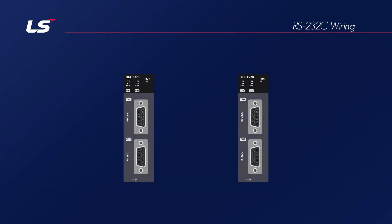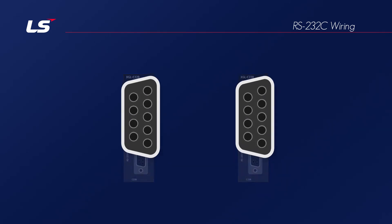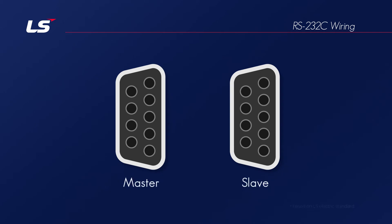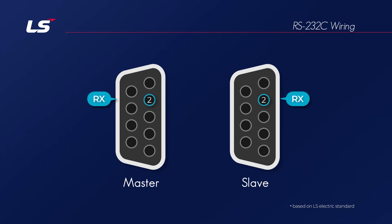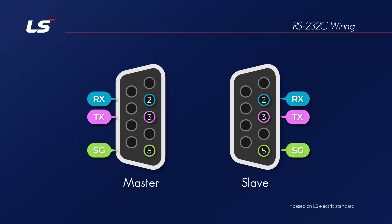Let's look at the wiring method for CNET communication. RS-232C communication is wired using a 9-pin connector. Pin number 2 is used as RX (received data), pin number 3 is used as TX (transmitted data), and pin number 5 is used as SG (signal ground).